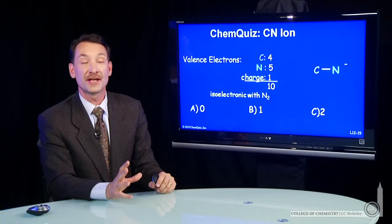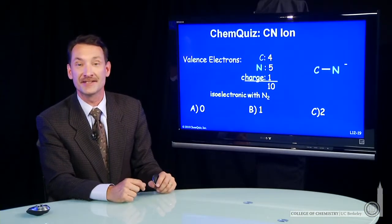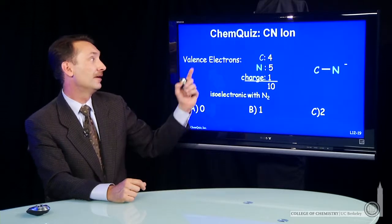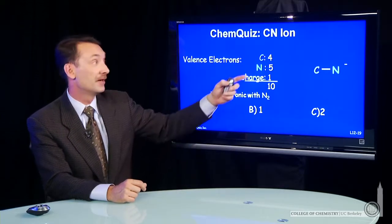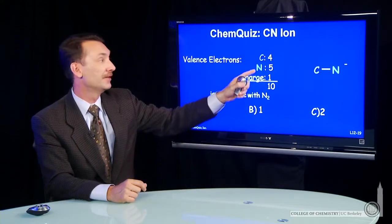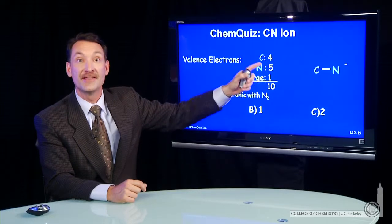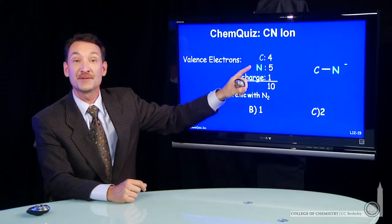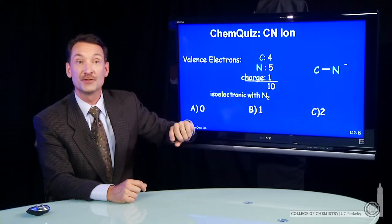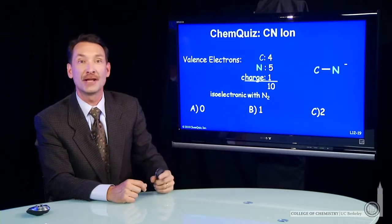We're writing the Lewis electron dot structure for CN minus, the cyanide ion. First, we count up the valence electrons. Carbon contributes four. Nitrogen contributes five. And the ion has a negative charge, so there must be an extra electron. That contributes one. So 10 total electrons.